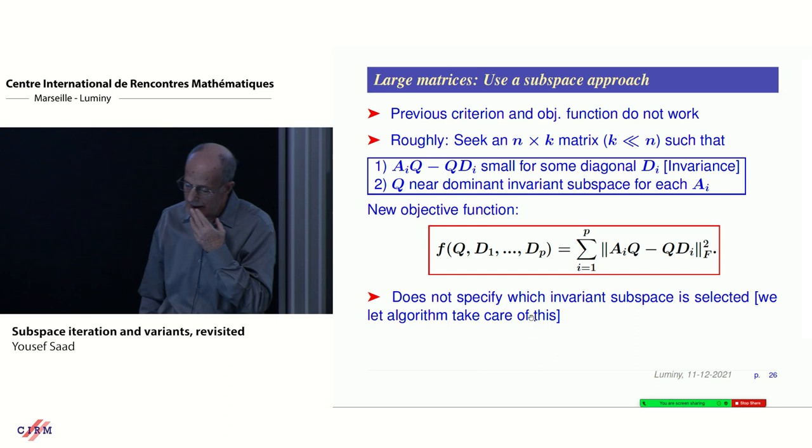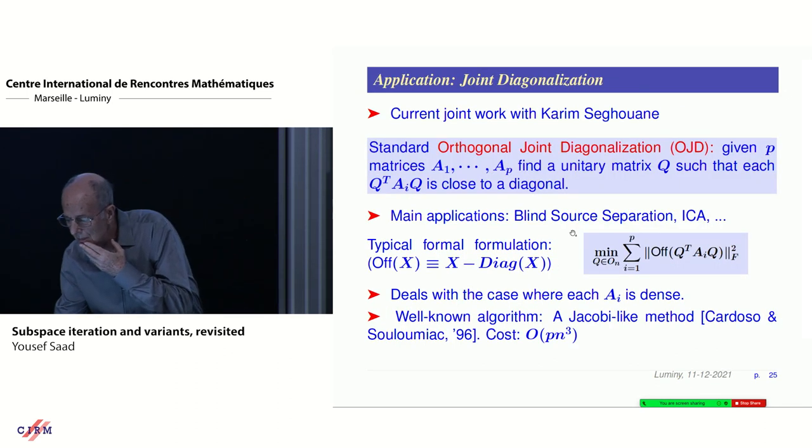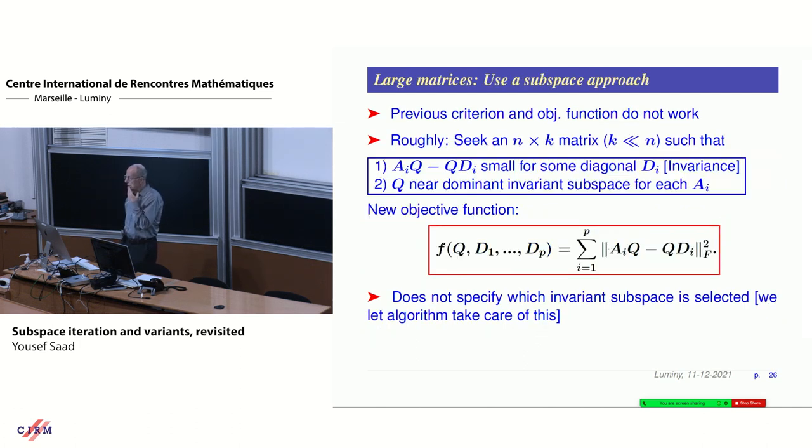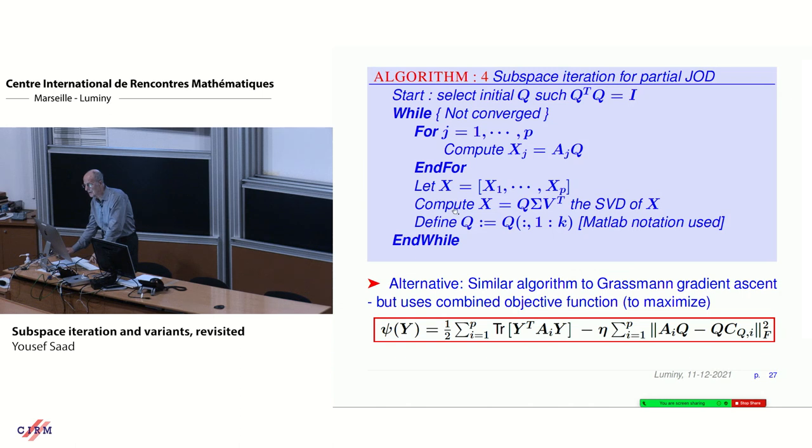The measure, the objective function used is this one. Off means off diagonal. What we do is we try to use subspace iteration approach. You have a subspace, you try to find a common matrix Q. Now for a large matrix, you cannot use the Jacobi approach. So you try to find Q so that AIQ minus QDIs are all small. That means you use an objective function like this. I'm going to make the story short.